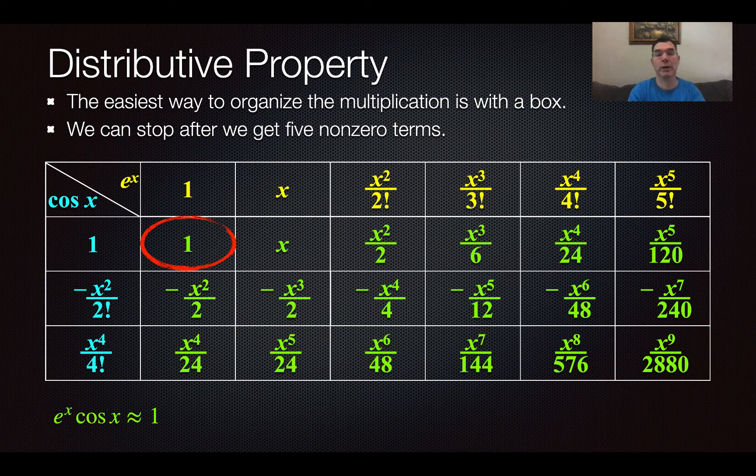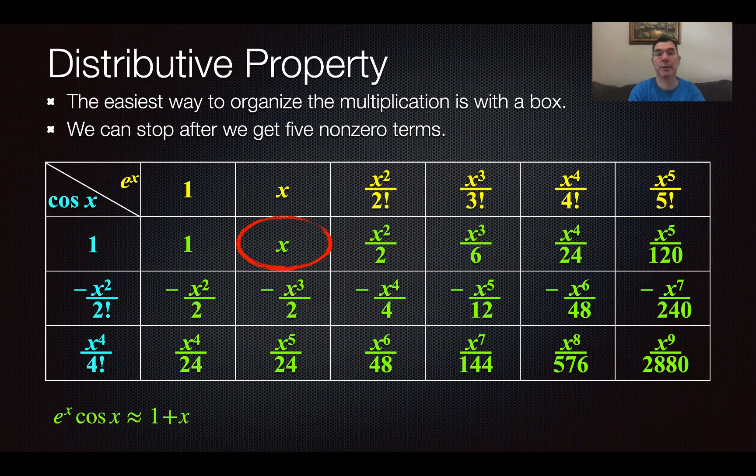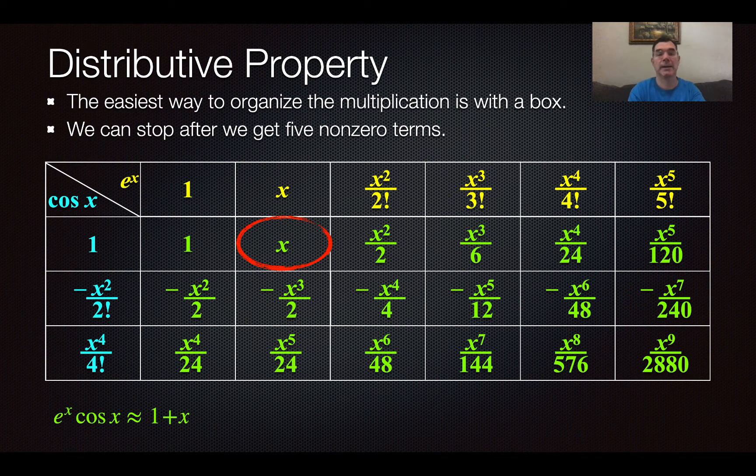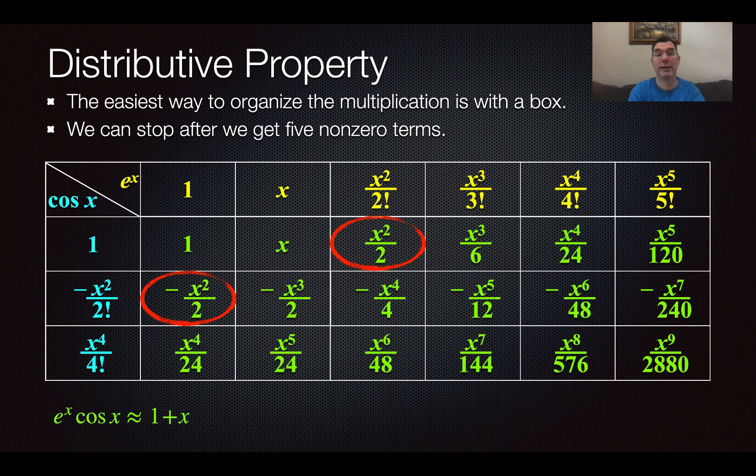Now I'm going to look for x's with no exponent, just x to the 1. And it looks like I only have one of those, so my next term is going to be x. So after that, I look for x squareds. And I have two of them, but they are the same with opposite signs, so I actually have no x squared term in my Maclaurin series.